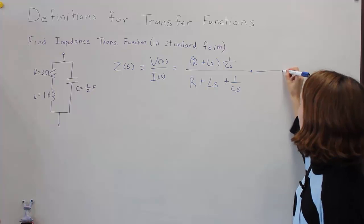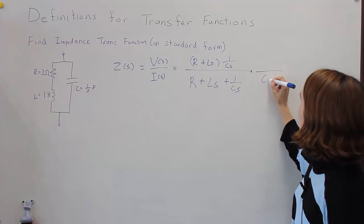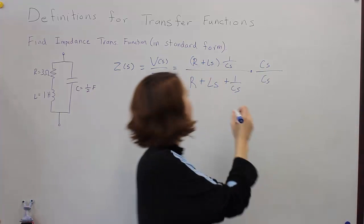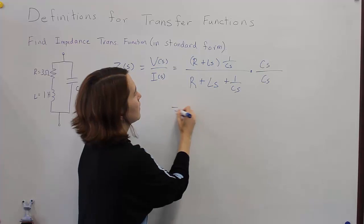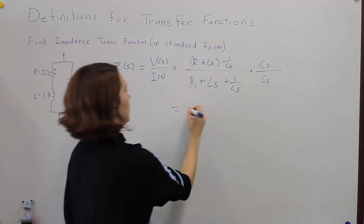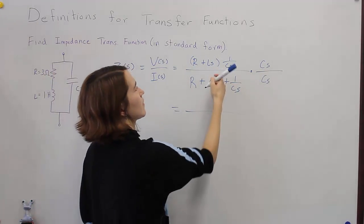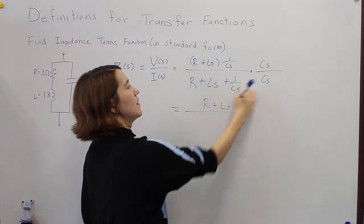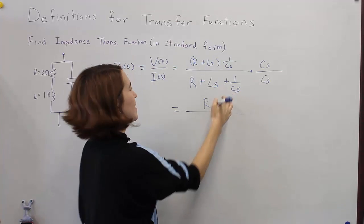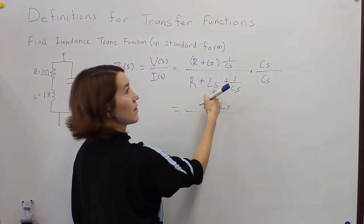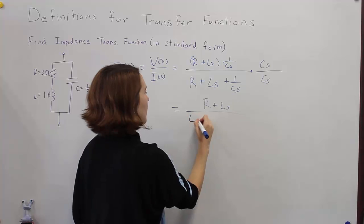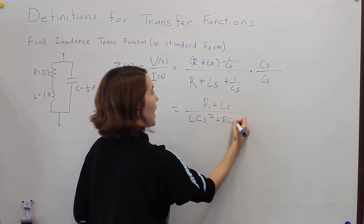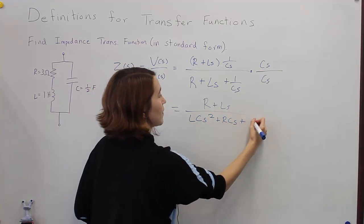We'll multiply both sides by Cs. That cancels the 1/Cs term, leaving R plus Ls on top. Multiplying through the denominator, and moving terms to the front, we get LCs squared plus RCs plus 1.